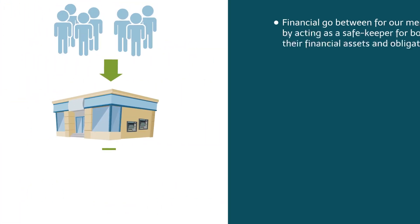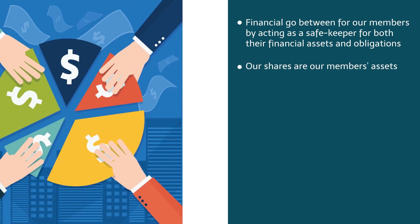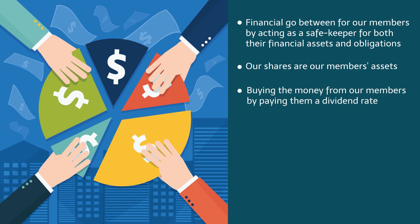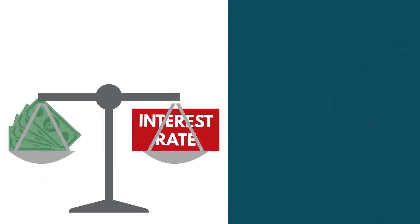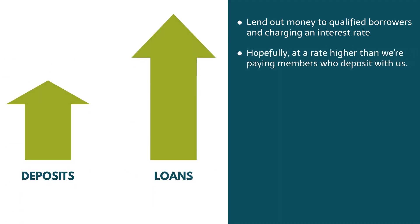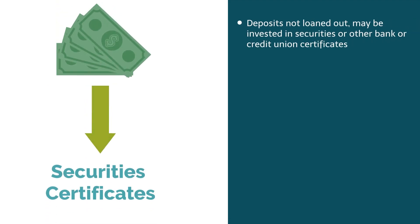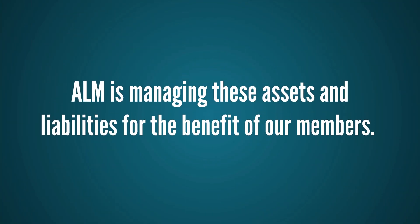As a credit union, we are a financial go-between for our members by acting as a safekeeper for both their financial assets and obligations. Our shares are our members' assets. When our members save money and place it on deposit in our credit union, we are buying the money from our members by paying them a dividend rate. Members who need money ask for a loan. We facilitate this by lending out or selling money to qualified borrowers and charging an interest rate, hopefully at a higher rate than we are paying members who deposit with us. Deposits not loaned out may be invested in securities or other banks or credit union certificates. At its very core, ALM is managing these assets and liabilities for the benefit of our members. In serving as the financial go-between, there are risks that we must manage.